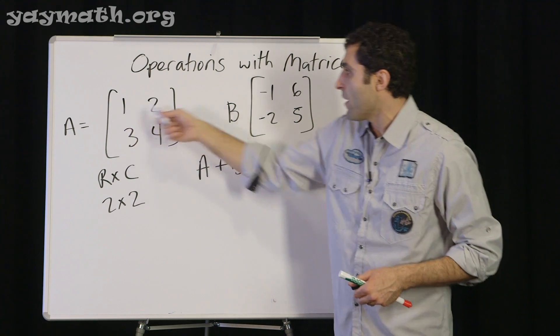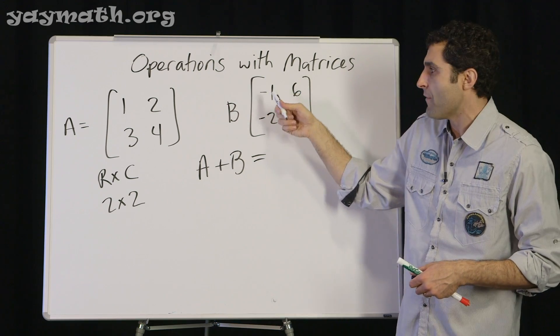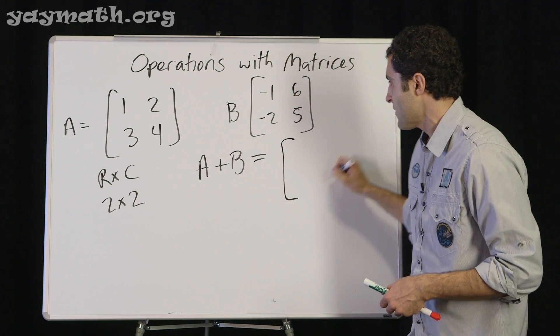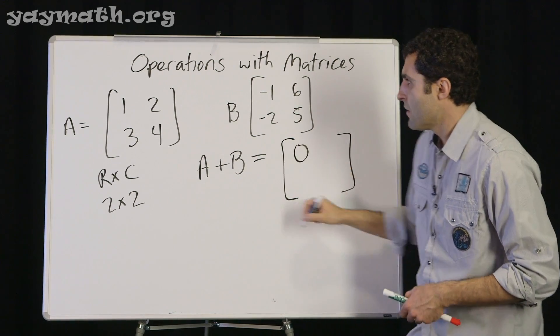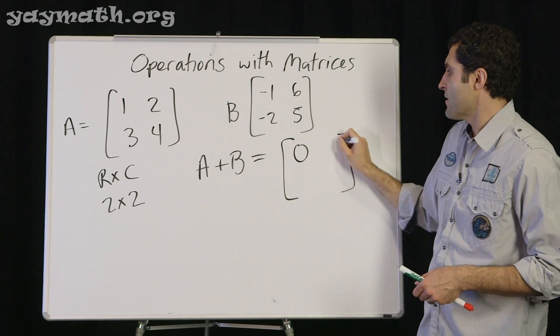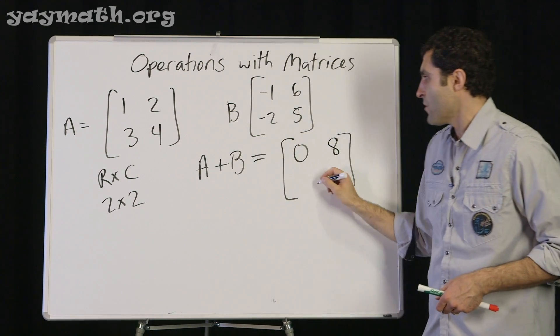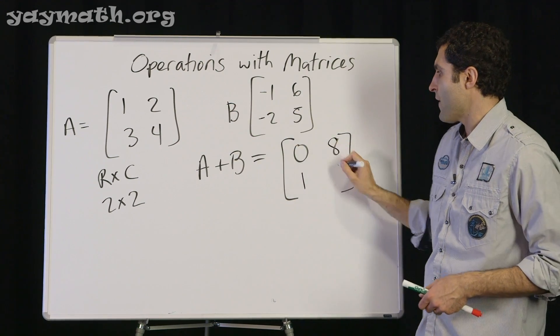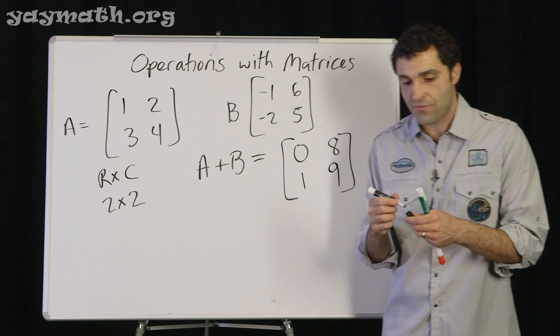So in this sense, A plus B, the one combines with negative one, both at the top left. And that results in the number zero. Two adds with six, that's eight. Three adds with negative two, that's one. And four adds with five, that's nine. So that's the result of adding two matrices.